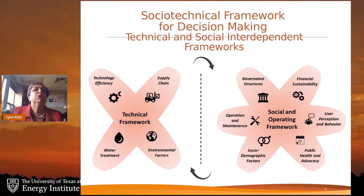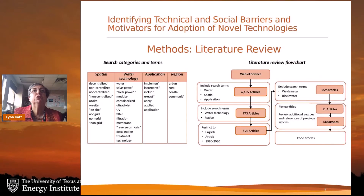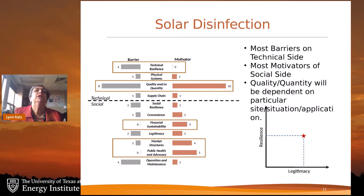Our approach is to make this system understandable in terms of how to get it adopted and whether adoption leads to high resiliency and high legitimacy. We conducted a literature review of thousands of articles to assess barriers and motivators for a variety of decentralized technologies across the globe. Looking specifically at solar disinfection, most barriers end up on the technical side, most motivators on the social side, with remaining differences becoming site- or situation-specific.